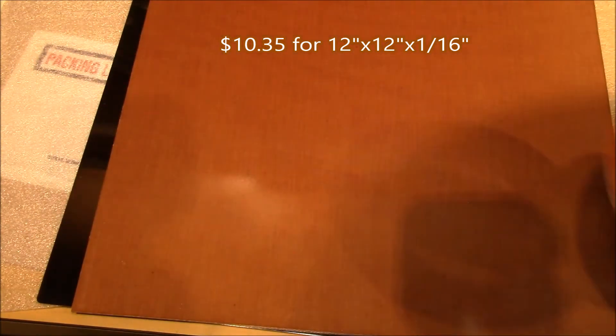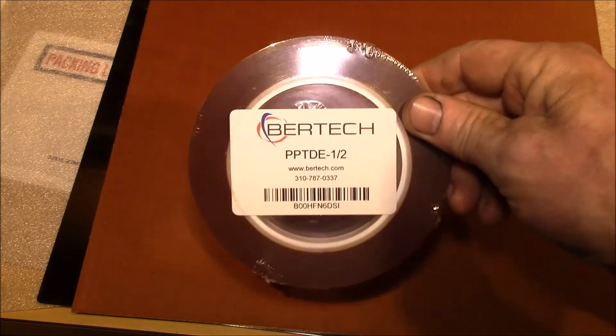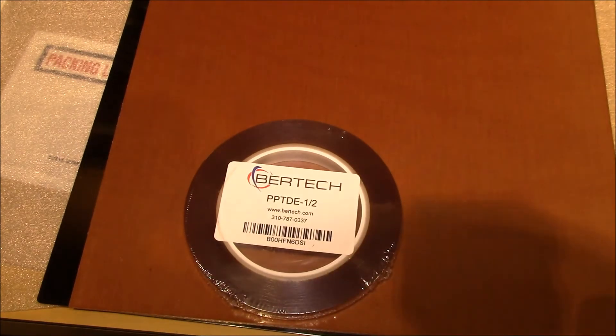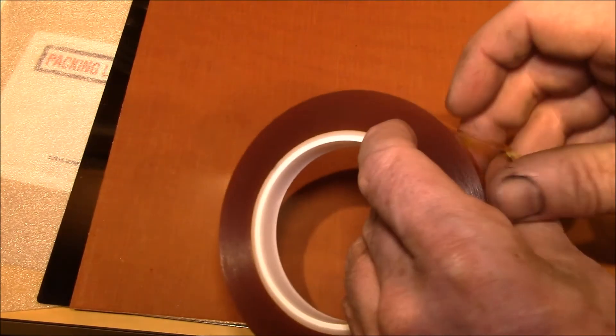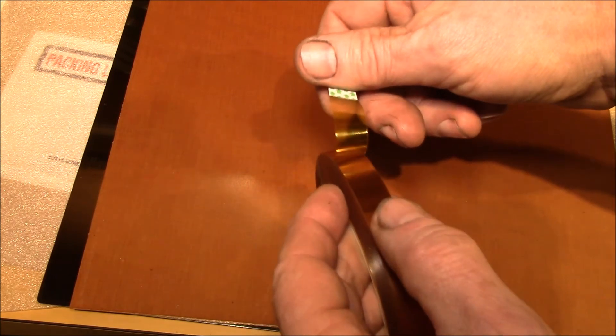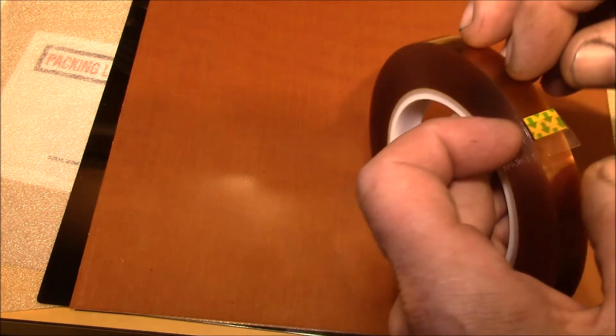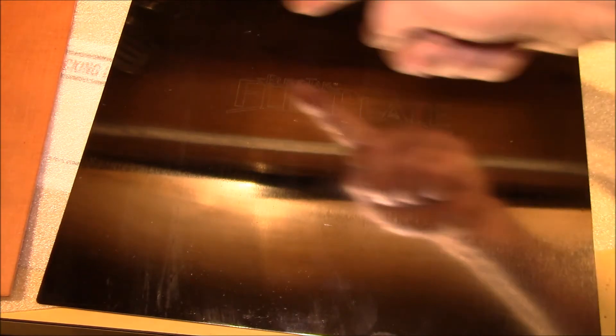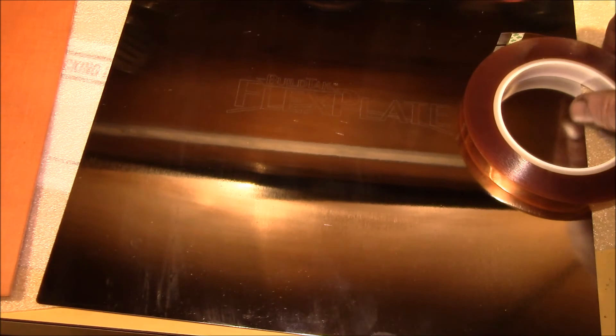To stick the two together I figured I would try this double sided kapton tape. It's got adhesive on both sides and then it's got the peel up protective layer on top. My thinking is I'm gonna lay down strips of kapton tape across here.